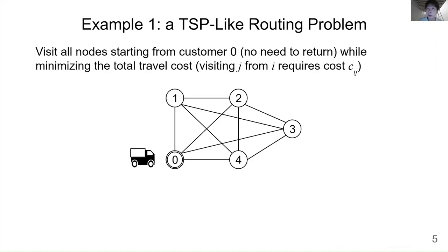As a running example of combinatorial optimization, I use a TSP-like routing problem. In this problem, a vehicle starts from the depot and visits all customers. For simplicity, we do not consider returning to the depot. Visiting customer j from customer i requires travel cost c_ij. The objective is to minimize the total travel cost.